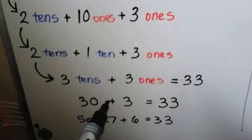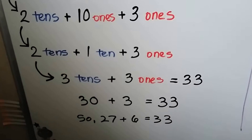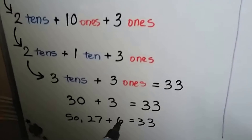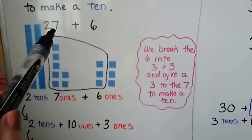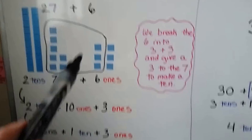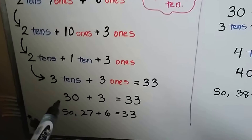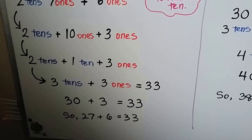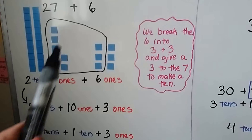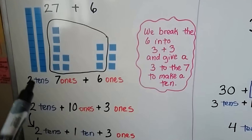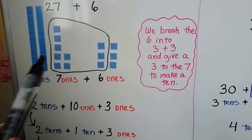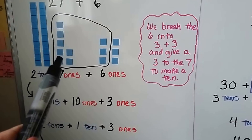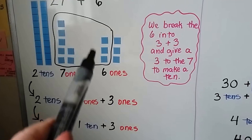We have three tens and three ones. That means we have thirty plus three, which equals thirty-three. So our initial problem — our initial number sentence, twenty-seven plus six — is the same thing as thirty plus three, and it's equal to thirty-three. We regrouped them. Instead of having two tens and seven ones together and then over here having six ones, we regrouped the ones and we made a ten.